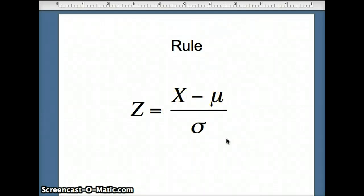What does z represent? z represents the number of standard deviations above or below the mean. If z equals 1, that means x is one standard deviation above the mean. If z is negative 2.5, that would mean that x is 2.5 standard deviations below the mean.